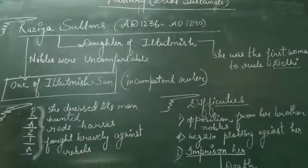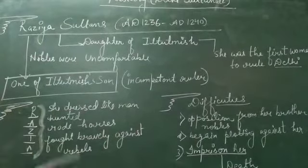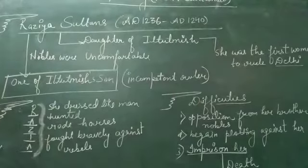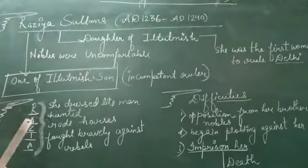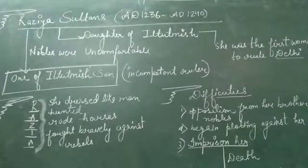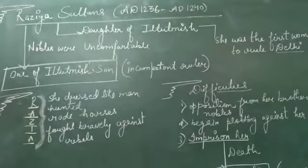When she became the ruler of Delhi, nobles became uncomfortable. Not only nobles, her brothers also became uncomfortable. She was the ruler - to hear that a woman is coming to rule over us.